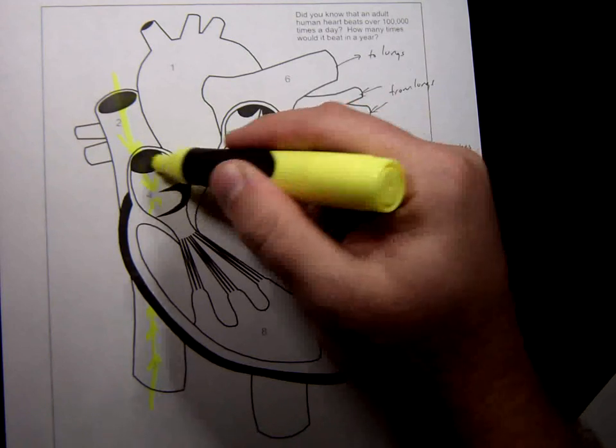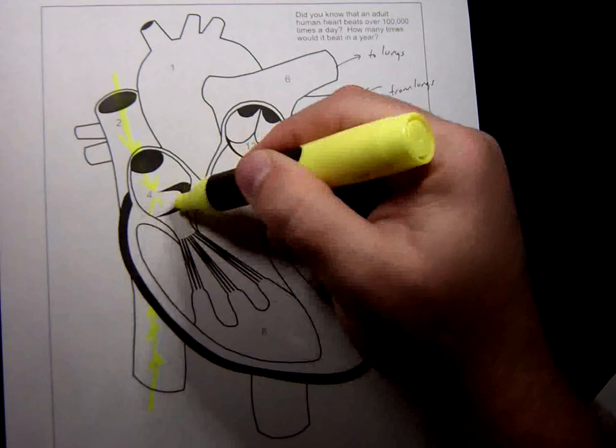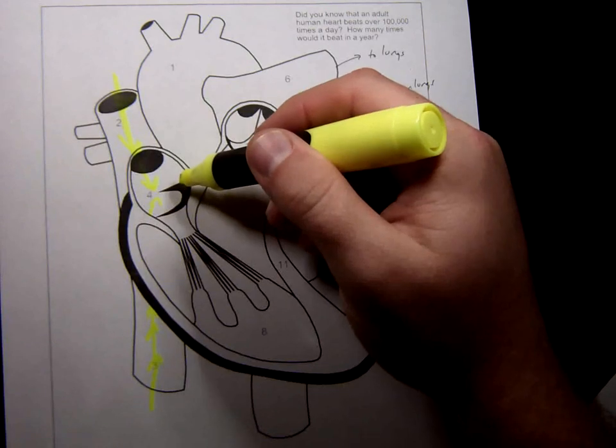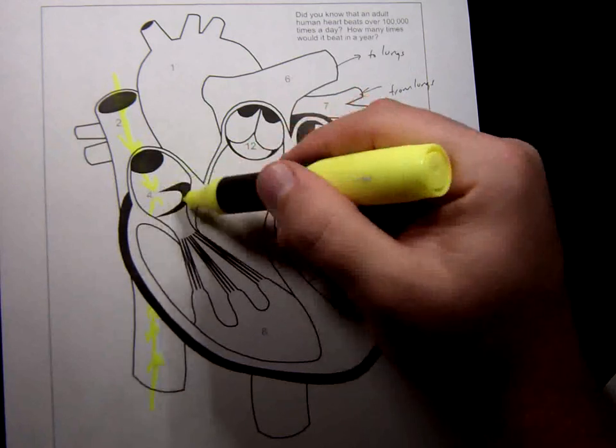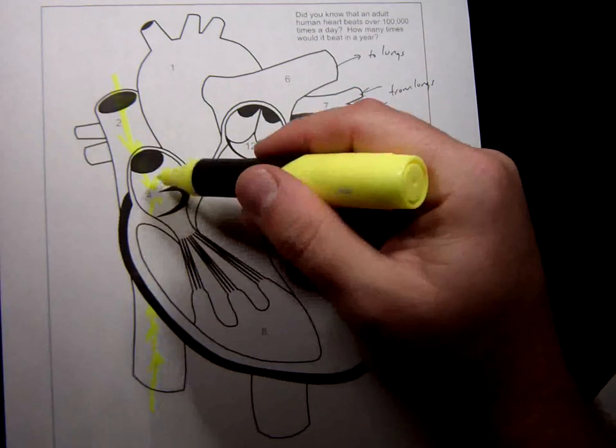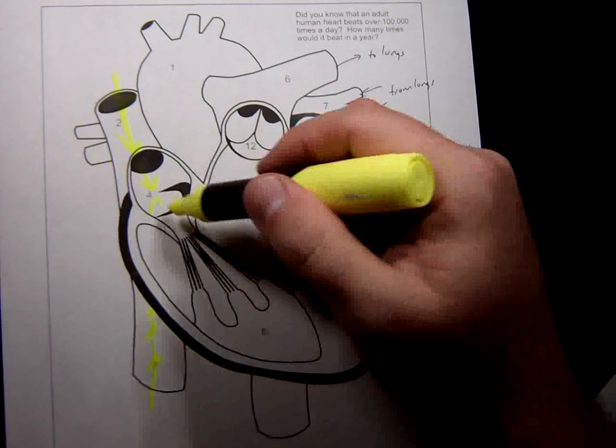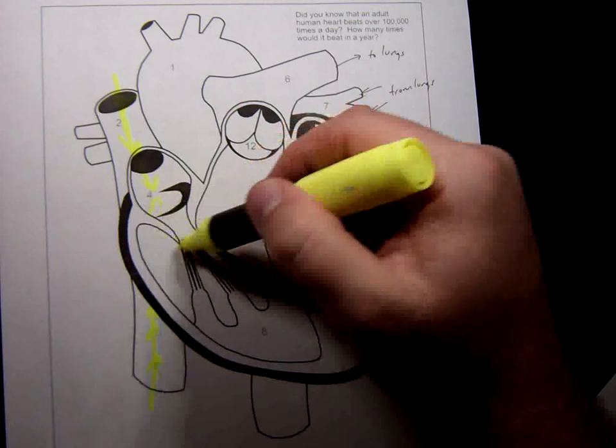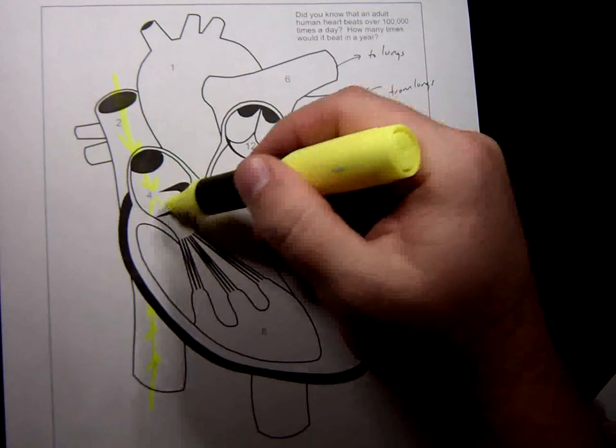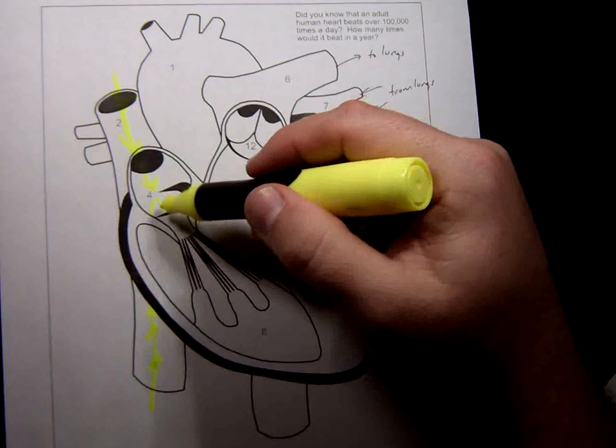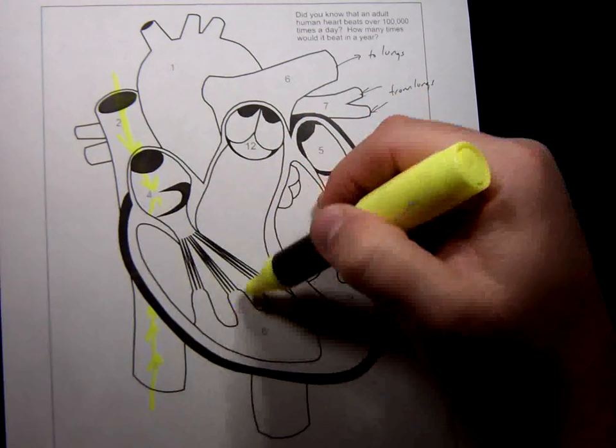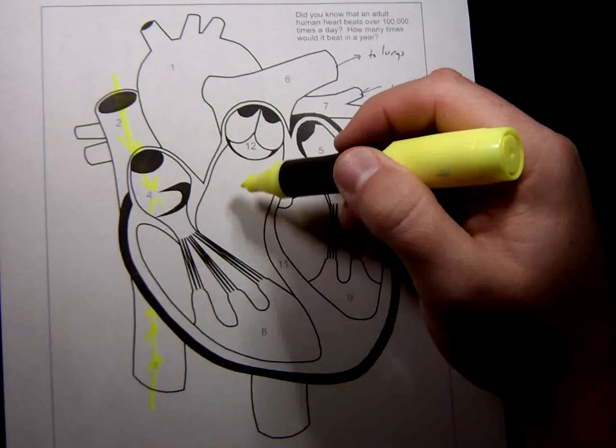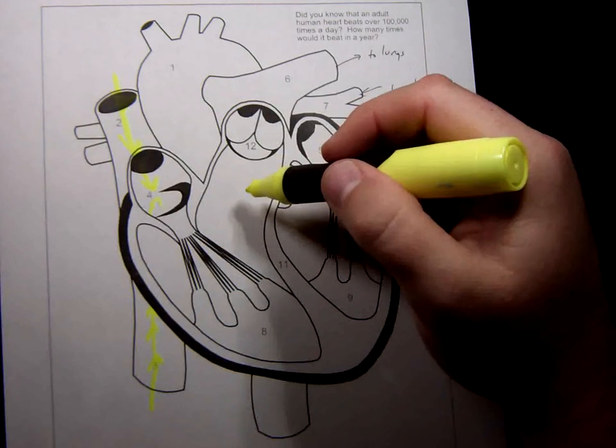They all end up in this chamber here. So blood goes through the vena cava and ends up in the right atrium. And then, its stay here is brief, so most of the blood doesn't stay in here. When it enters this chamber, it just cruises right on through this valve, known as the tricuspid valve, and ends up in the right ventricle.